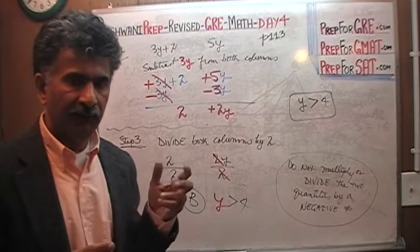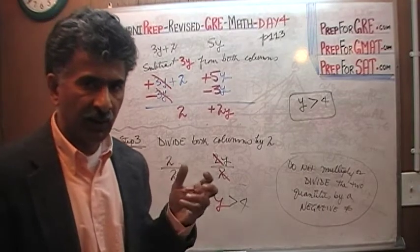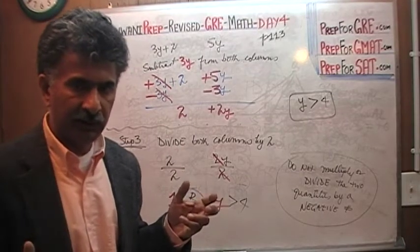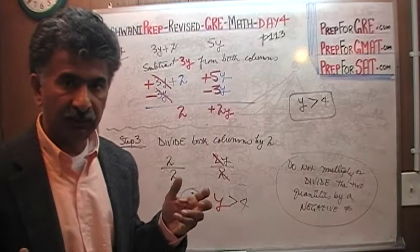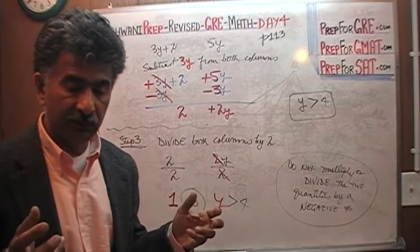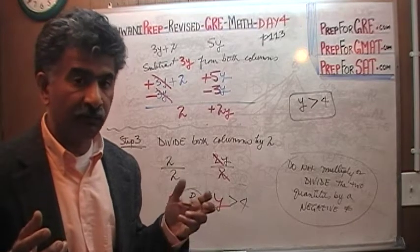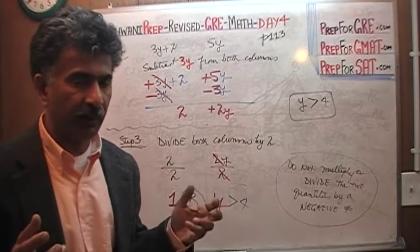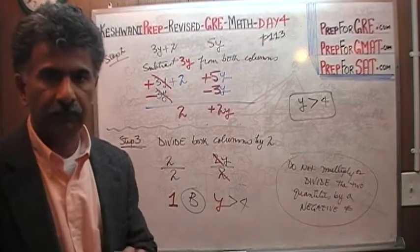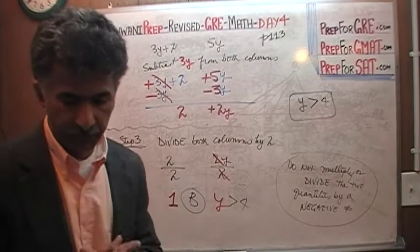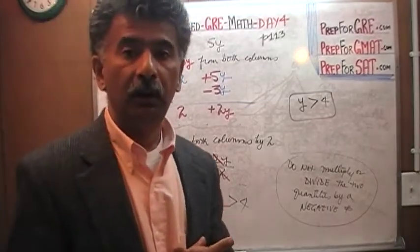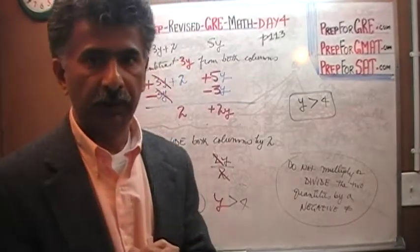If the quantity in column A is bigger than the quantity in column B, and you multiply both quantities by a negative number, it will mess up the whole thing. So don't deal with negative numbers. I will see you tomorrow. Bye.